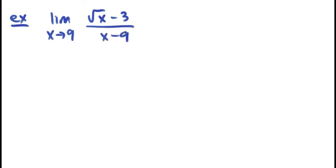And you'll notice that this is of the form 0 over 0. As you substitute in 9 for x, you get 3 minus 3. And as you substitute 9 for x on the denominator, you get 9 minus 9. So we should be able to use an algebraic approach.